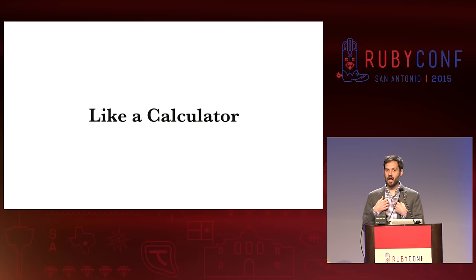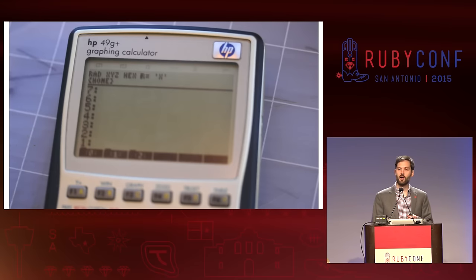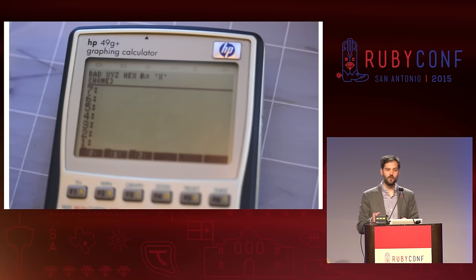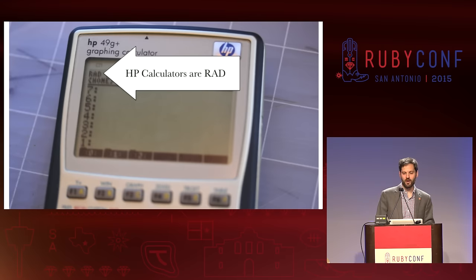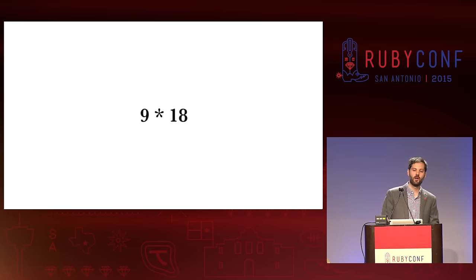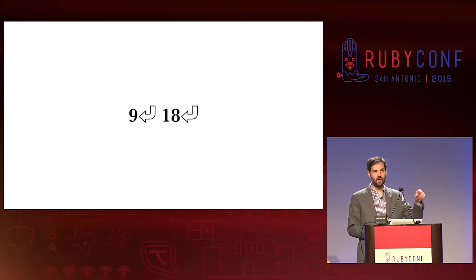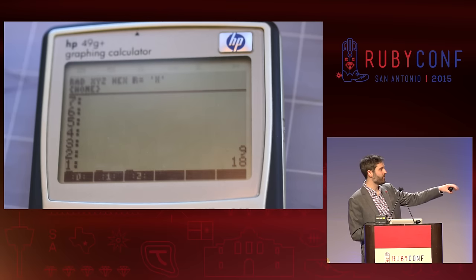It's very much like an HP calculator that I used all throughout high school and into college before I dropped out of college. For those of you that have not used an HP calculator, let's say we want to do the calculation 9 times 18. The way you actually do this is: on the HP you go 9, hit enter, then hit 18, and then hit enter. You end up with two numbers on the stack — you'll see 9 and 18.